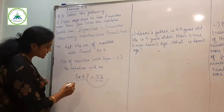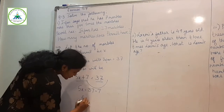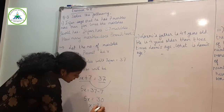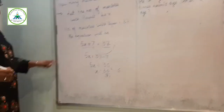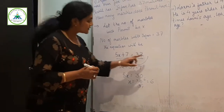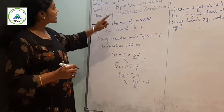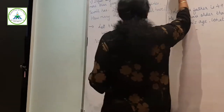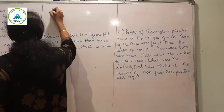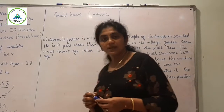Taking 7 to the right hand side, you get 5x equals 37 minus 7, so 5x equals 30. Solving the equation: x equals 30 divided by 5, so x equals 6. Using the transposition method, bring 7 to RHS — it becomes minus — so 5x equals 30, x equals 6. Therefore Permit has 6 marbles.